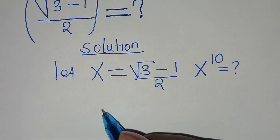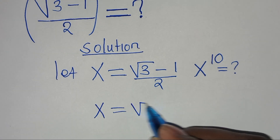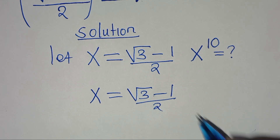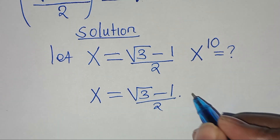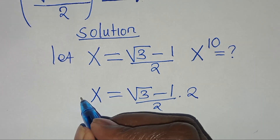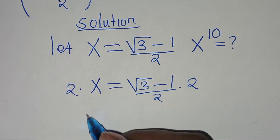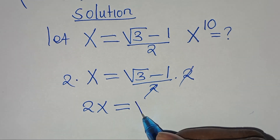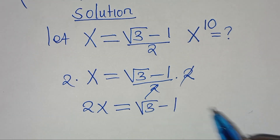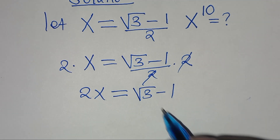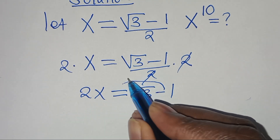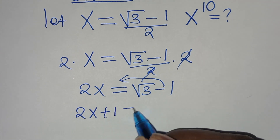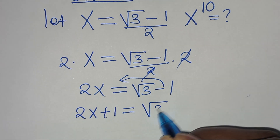Since we have x equal to square root of 3 minus 1 divided by 2, the first step is to multiply both sides by 2, so that now we have 2x is equal to square root of 3 minus 1. The next step is to take minus 1 to the left hand side, so that we have 2x plus 1 is equal to square root of 3.